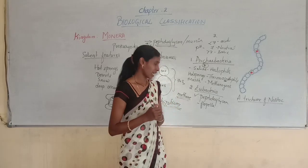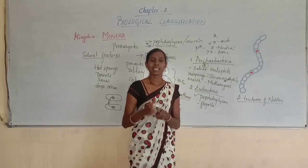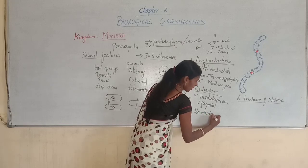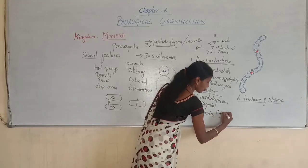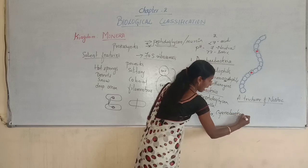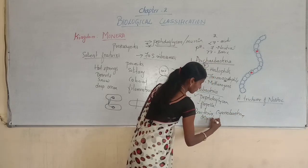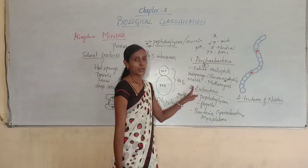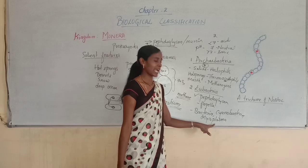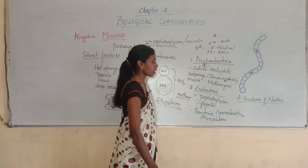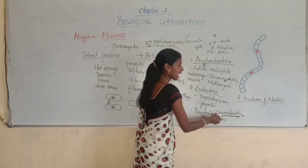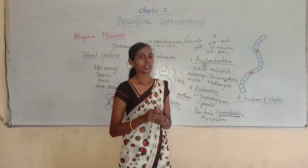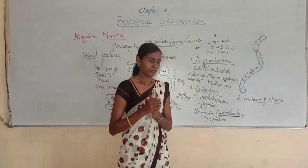Eubacteria has many groups including bacteria, cyanobacteria, and mycoplasma. Now we will first discuss cyanobacteria. Cyanobacteria are autotrophic, meaning they can prepare their own food.